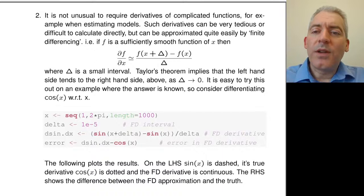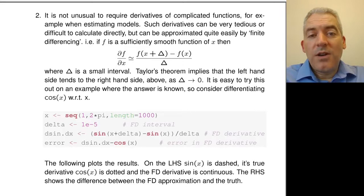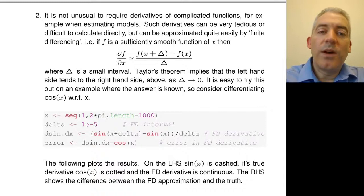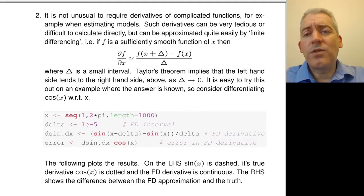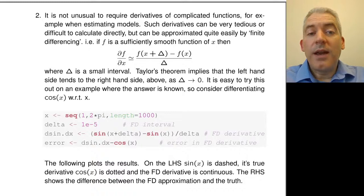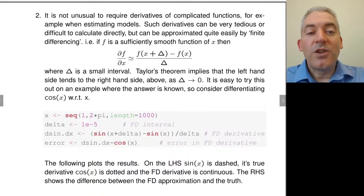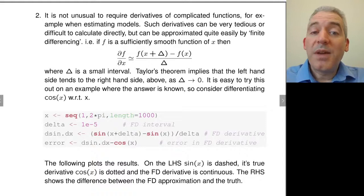A bit later on we're going to be looking at doing calculus by computer — both differential and integral calculus. Very often in optimization, for example when maximizing a likelihood, we want to work out gradients. If you've got a very complicated function, you might not know its analytical derivative. The most obvious thing to do might be to calculate a numerical derivative using a finite differencing approach — taking the basic definition of a derivative as a limit and evaluating it at a finite increment delta. As delta goes to zero, this should tend to the true derivative.